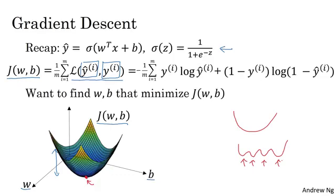The fact that our cost function J as defined here is convex is one of the huge reasons why we use this particular cost function J for logistic regression. To find a good value for the parameters, what we'll do is initialize W and B to some initial value, maybe denoted by that little red dot. For logistic regression, almost any initialization method works. Usually you initialize the values to zero. Random initialization also works, but people don't usually do that for logistic regression. Because this function is convex, no matter where you initialize, you should get to the same point or roughly the same point.